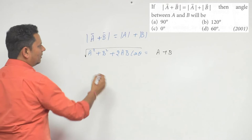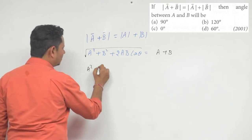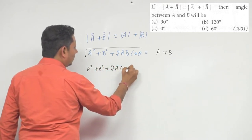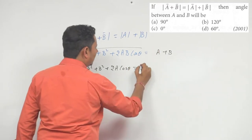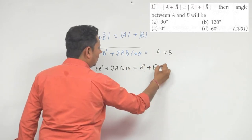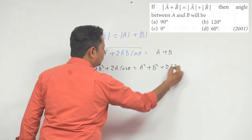If that is the case, doonho taraf agar ham square kare dhe, so this will be A square plus B square plus 2AB cos theta will be equal to iska square kare enghe, so this will be A square plus B square plus 2AB.